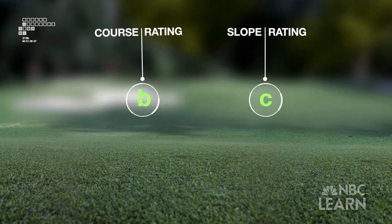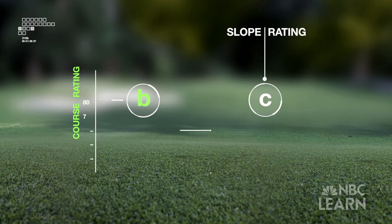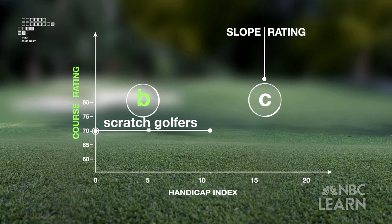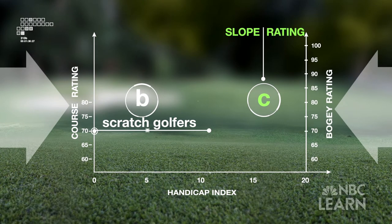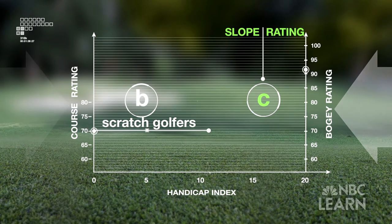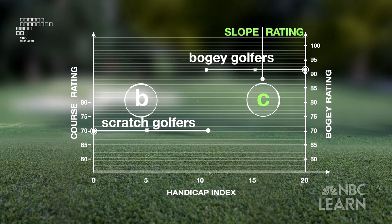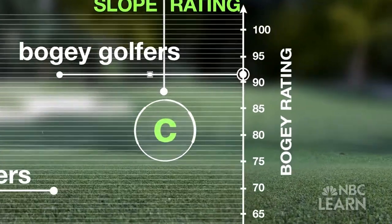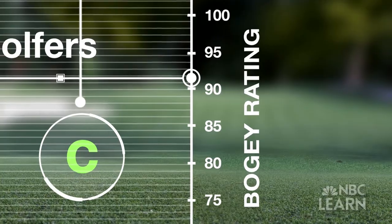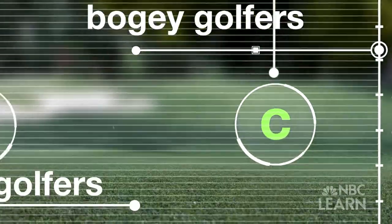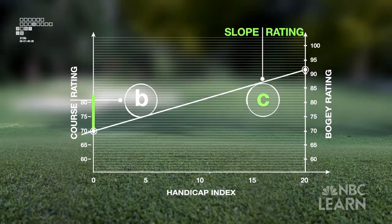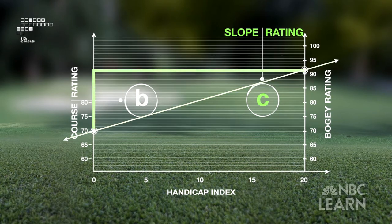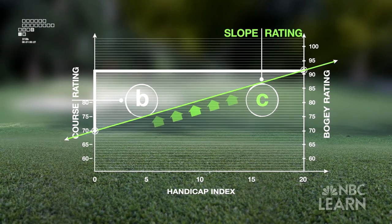The first, course rating, is derived from the scores produced by scratch golfers for a set of tees. The second factor, slope rating, is found by comparing the course rating to the bogey rating, which is derived from scores produced by bogey golfers. The bogey rating is going to be a higher number than the USGA course rating for a scratch golfer. We draw a line between those two numbers, and the rise over the run of those two points gives us our slope rating.